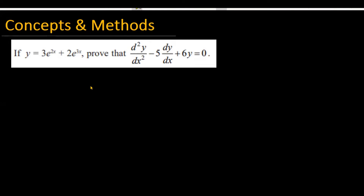The question is: if y is equal to 3 into e raised to the power 2x plus 2 into e raised to the power 3x, then prove that d²y/dx² minus 5 times dy/dx plus 6y is equal to 0.